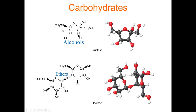We can identify the alcohol functional groups (OH groups) and the ether functional groups (carbon-oxygen-carbon) in a disaccharide. Here's an ether in this ring, here's an ether in the other ring, and here's another ether joining the two rings together. So there are three ethers in this disaccharide and eight alcohols. This disaccharide is called lactose — the same lactose in milk that gives some people stomach problems.